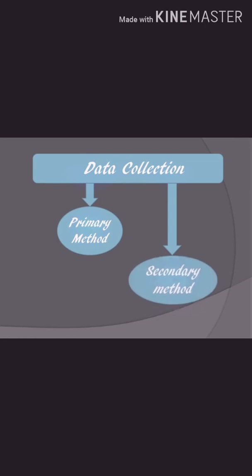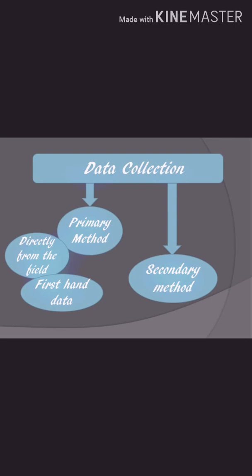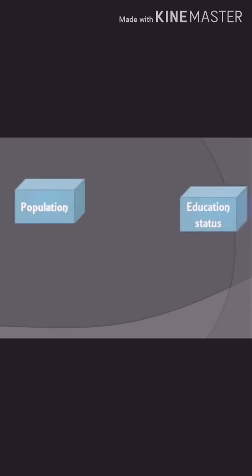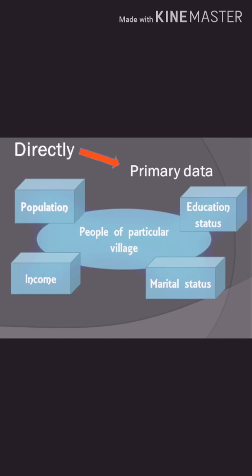The question is: how to collect the data? You can collect data in two ways — one is by primary method and another is by secondary method. If you're collecting data directly from the field, that is called primary data, or first-hand data. In this method, you personally go for collection of data, either through a questionnaire method, personal interview method, or some other method. For example, if I collect information regarding population, education status, and income from people of a particular village directly, that becomes primary data collection.